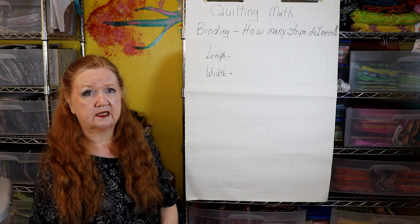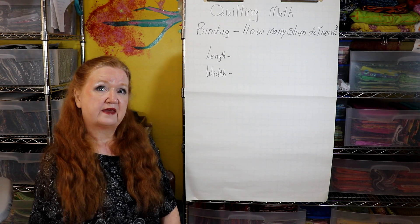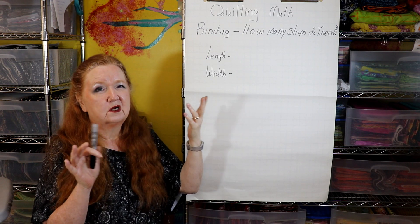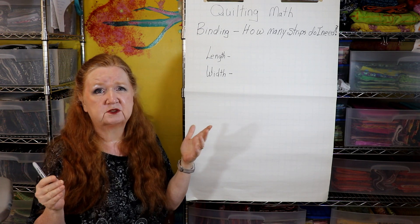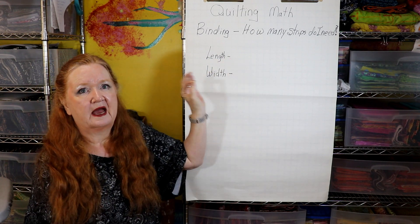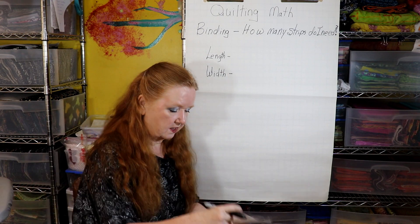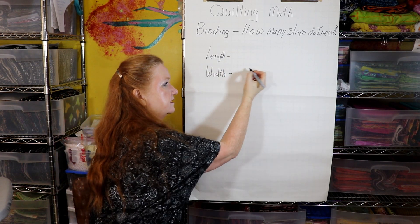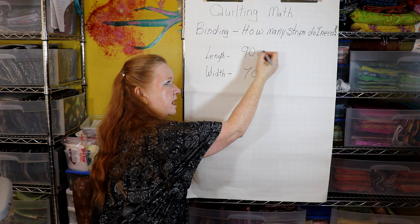Let's say your quilt length measures 70 inches in one place, 72 in another, and 71 somewhere else — the average is 71. But since the quilt could be bowed, it's better to give yourself a little wiggle room and use 72. If you make a bit too much binding, you put it in your scrap bin. For our example, we're doing a twin quilt: 70 inches wide by 90 inches long — that's our average.